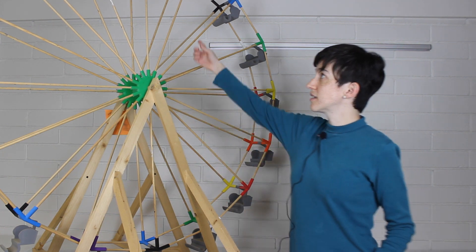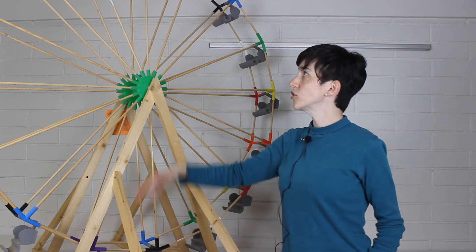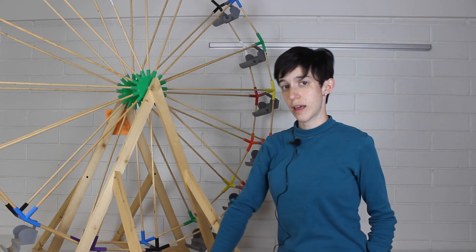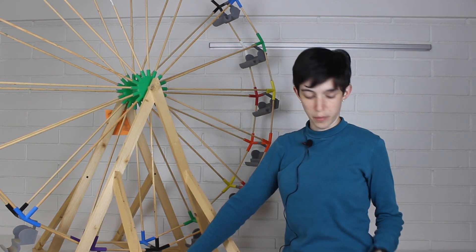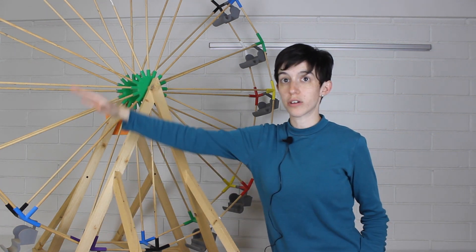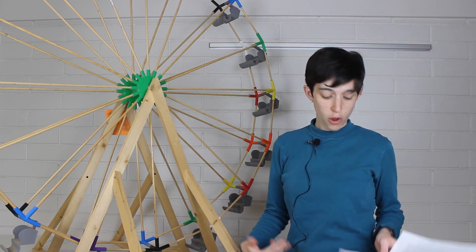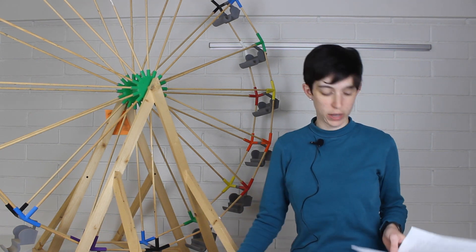When you are descending on the Ferris wheel, this is where the ride gets really exciting. It's because you're experiencing F1, F2, which is the force we'll talk about in a minute, the rotation of the wheel and the weight are combined. This causes a greater acceleration, or G-force, that makes you feel heavier.